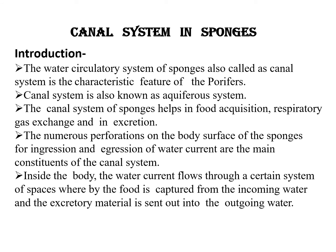First of all, we must know what is a canal system. The canal system is a distinguishing feature of all sponges. The sponges have a perforated body with numerous apertures for incoming and outgoing water currents. Inside the body, the water current flows through a certain system of spaces which collectively form the canal system. This water circulatory system is the characteristic feature of all porifera, and is also known as the aquiferous system.